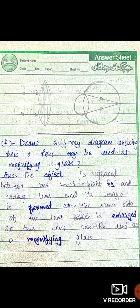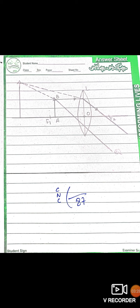You have to draw the diagram as well. Next: draw a ray diagram showing how a lens may be used as a magnifying glass. The object is placed between the focal point F1 and the convex lens; its image is formed on the same side of the lens and is enlarged. So the lens can be used as a magnifying glass. You also have to draw the diagram.